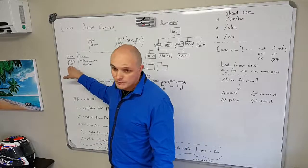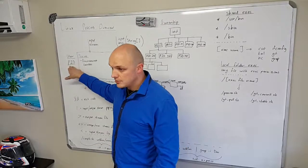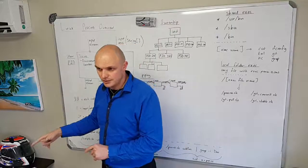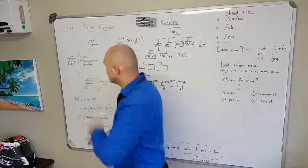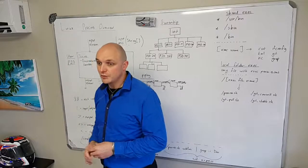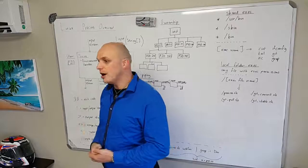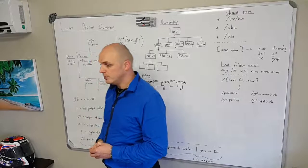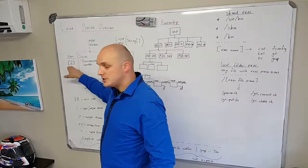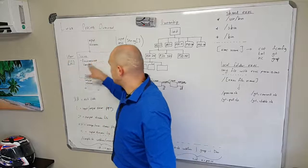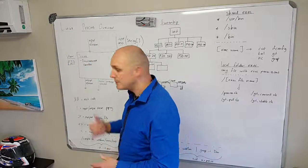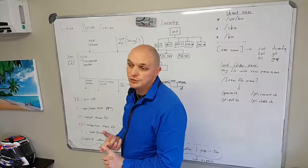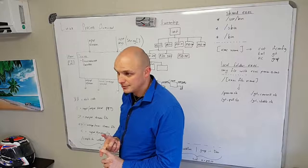Each process also has an ID, which is an integer value — it goes up to about 32,000 and starts back at zero again. This ID is used to manage processes. If you want to kill a process you use the ID. If you run the top command or the ps command, you get a list of processes showing the process ID, the user, the process name, when it was started, how long it's been running, memory usage, and CPU usage.